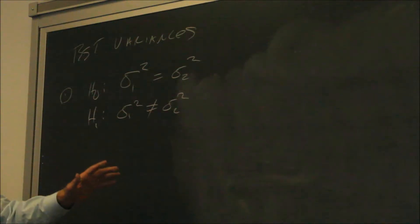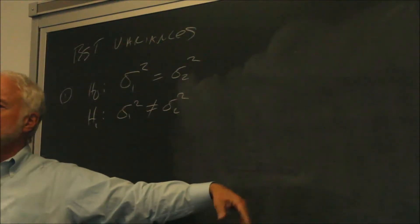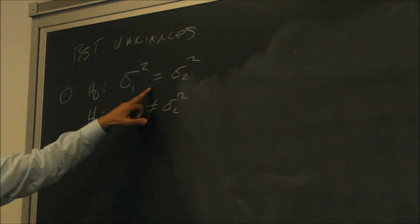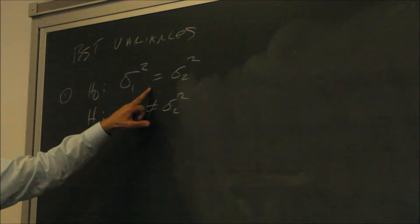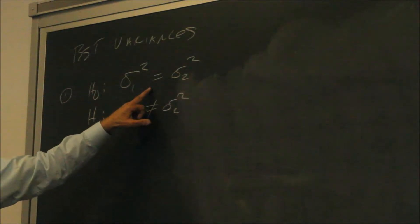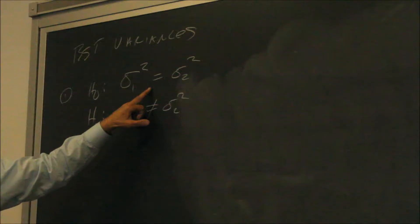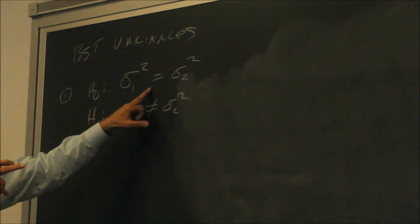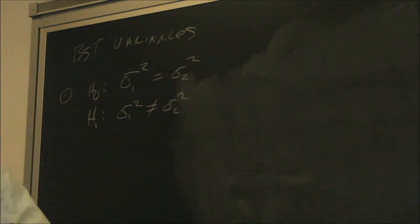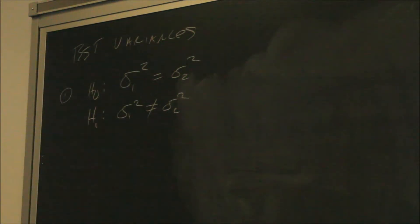If you go through the whole test and it says accept H0, the assumption is that the variances are equal. And so when you test the means and come to the test statistic — if it's a T — you use the T where it's assumed that the variances are equal. That's the process we go through to determine which test statistic to use when testing means of unrelated populations.